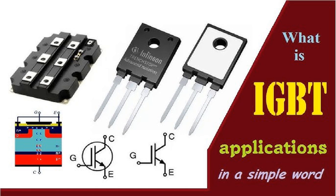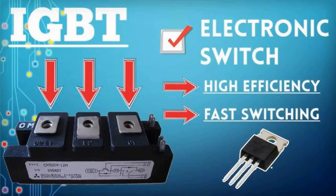Applications of IGBT: motor drives used in variable frequency drives (VFDs) for industrial motor control; power inverters common in solar inverters, uninterruptible power supplies (UPS), and renewable energy systems; electric vehicles (EVs) where IGBTs are used in EV power control units to convert power efficiently; switch mode power supplies (SMPS); and HVDC systems used in high-voltage direct current power transmission. In summary, IGBTs are versatile and efficient components for high-power applications, providing a balance between high-current, high-voltage handling, and fast switching with low losses.